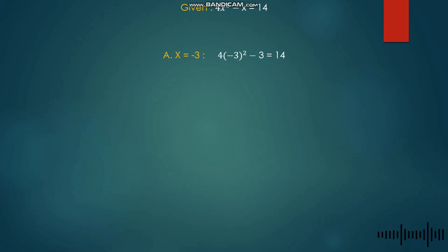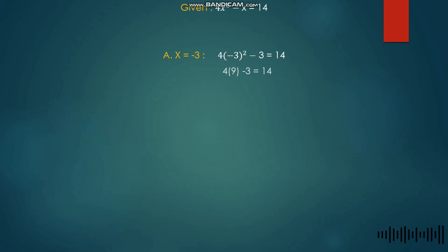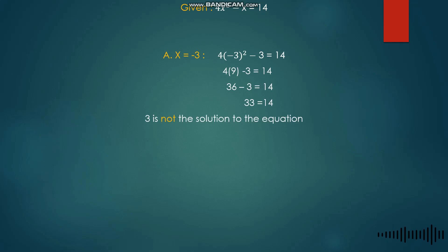First, we check Letter A where x = −3. Substituting, we get 4 times (−3)² minus (−3) = 14. Since (−3)² = 9, we have 4 times 9 minus 3 = 14, which gives 36 − 3 = 33. Since 33 ≠ 14, Letter A is not the correct answer.